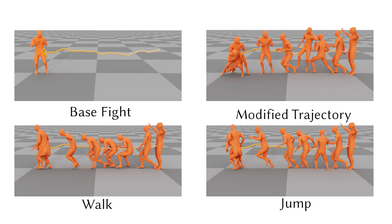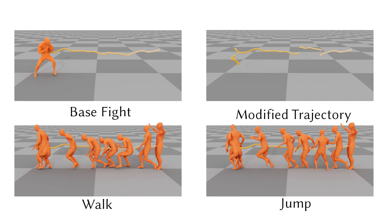We modify the root position height by plus 25 cm from frame 70 to 105 and minus 30 cm from frame 170 onwards. The generated result maintains natural human kinematics.